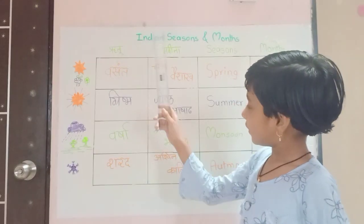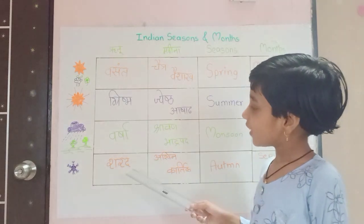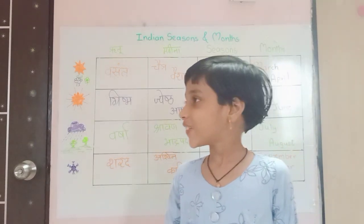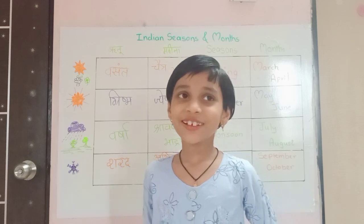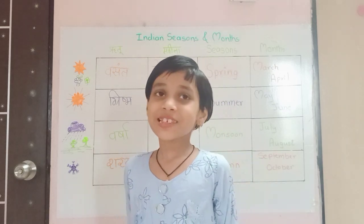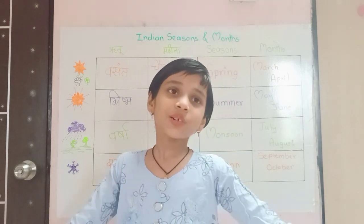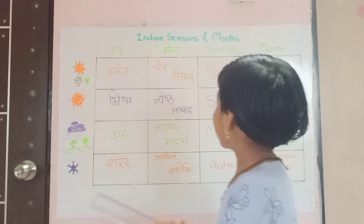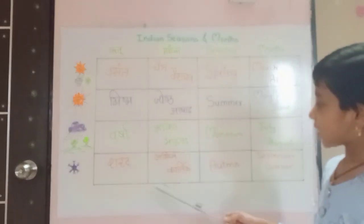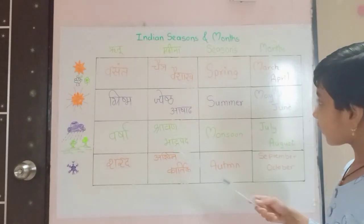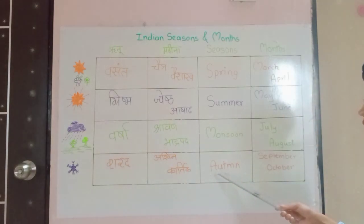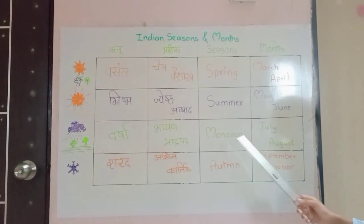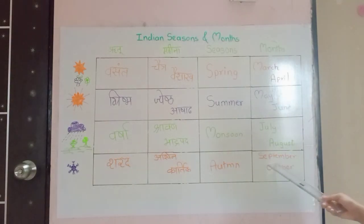Next Ritu is Sharad. Cool breeze, cool breeze — the waves are coming. It's so soothing. It falls in Mahina Ashwin and Kartik. The English name for Sharad is Autumn, which falls in September and October.